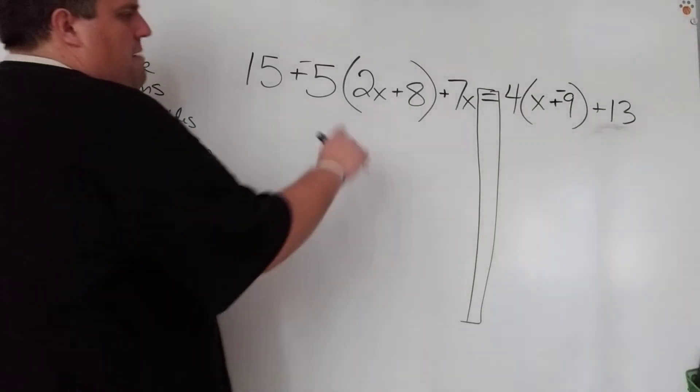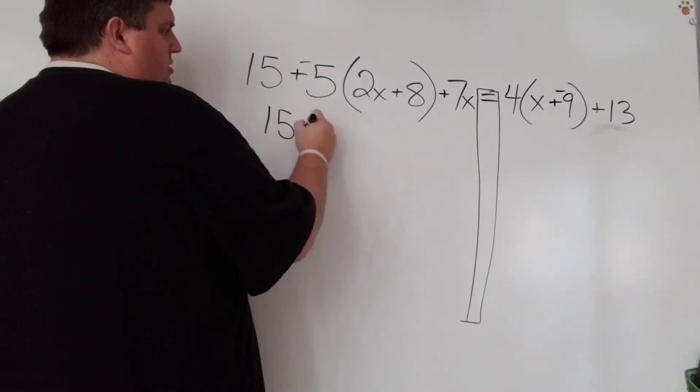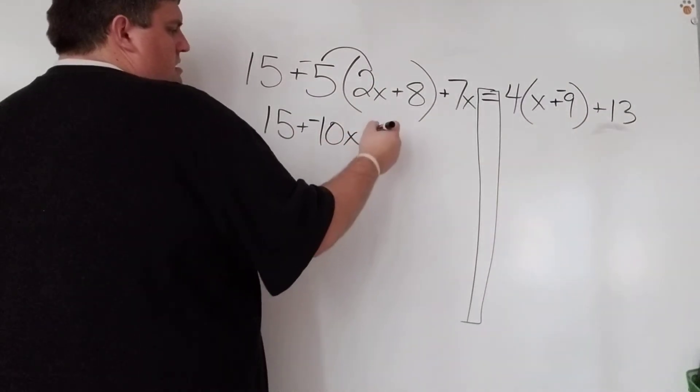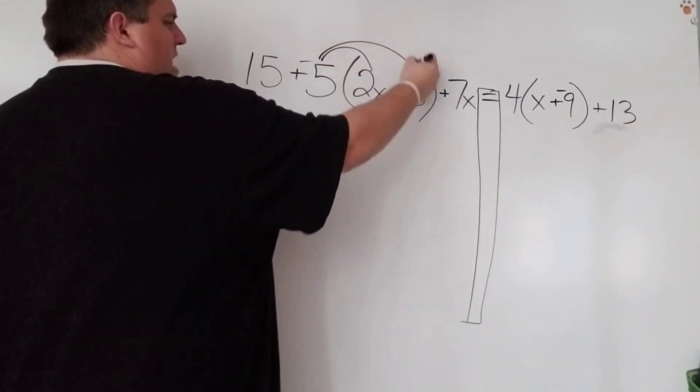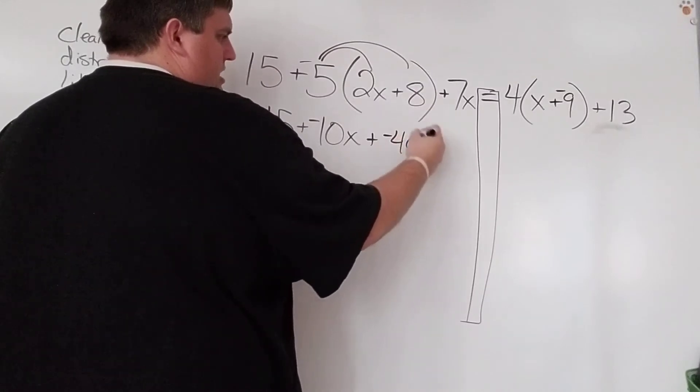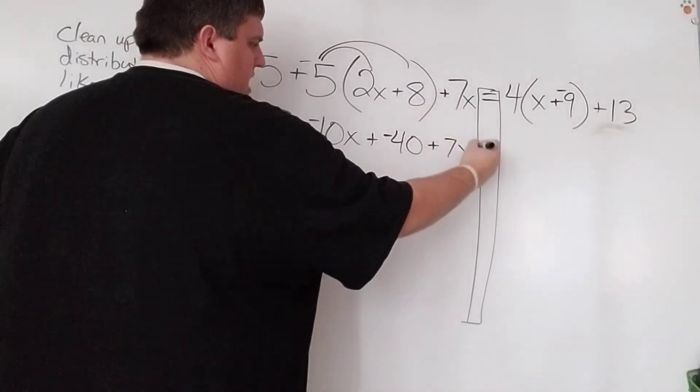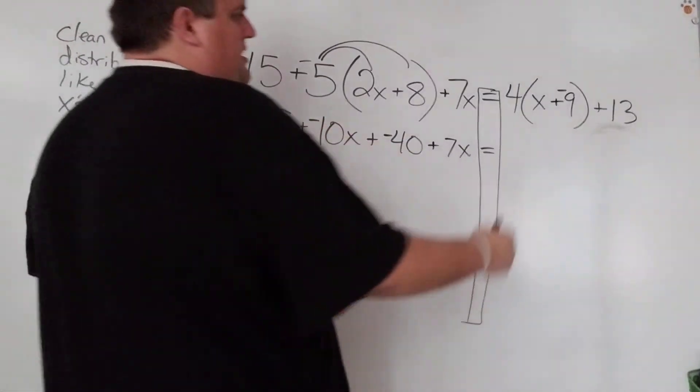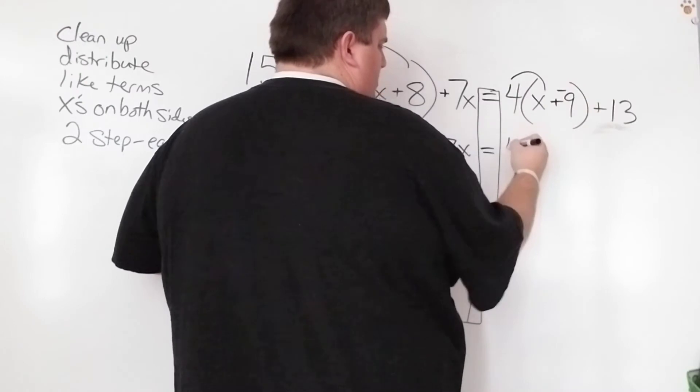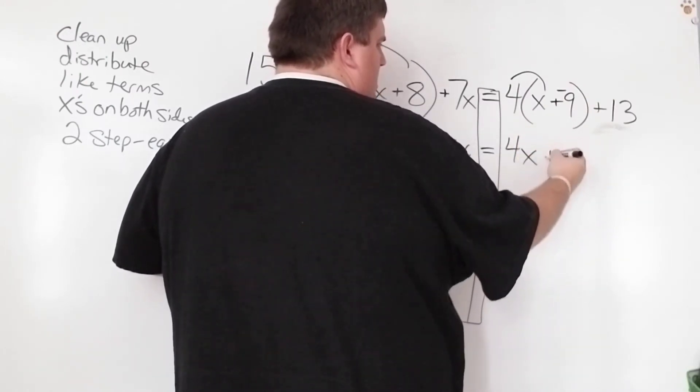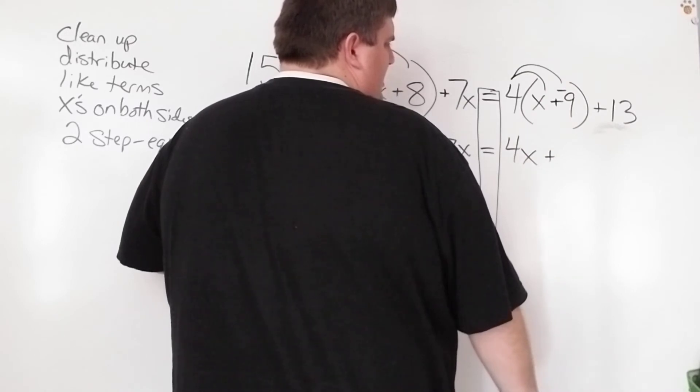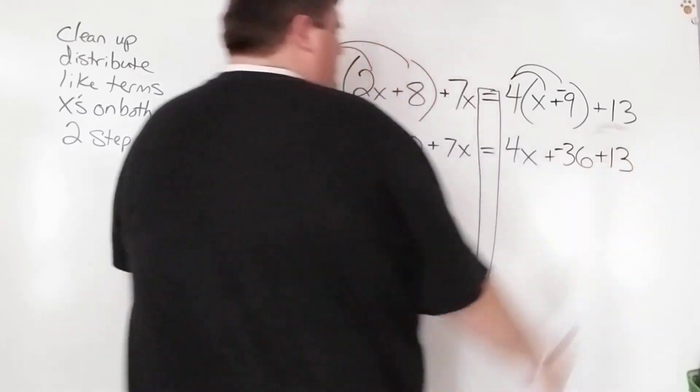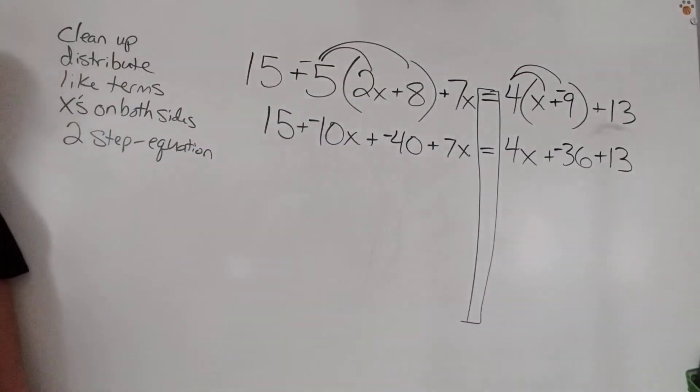Distribute. I definitely have distributed property on both sides. So negative 5 times 2x is negative 10x. Negative 5 times 8 is negative 40. And then this stays the same. And then on the right side over here, I'm going to distribute this 4. 4 times 1x is 4x. 4 times negative 9 is negative 36. And that's what it looks like after I use distributed property on both sides.